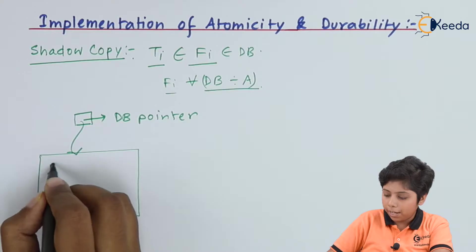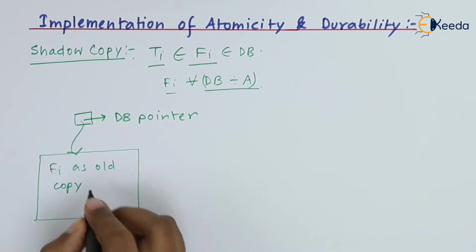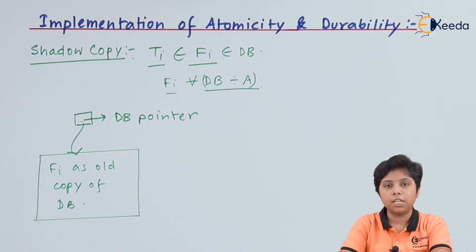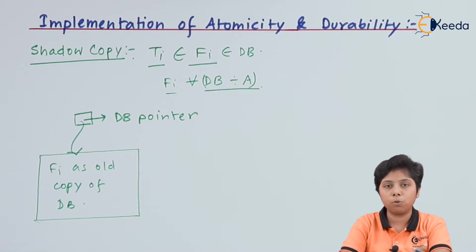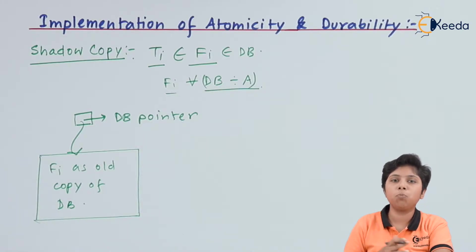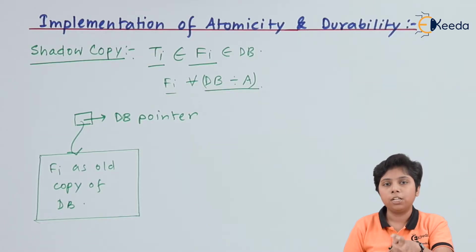So Fi holds the old copy of this database, and my DB pointer is pointing to that old copy. Now, whenever the transaction needs to access this particular portion Fi, it copies this into a new portion. For the transaction, this copy will be made entirely to a new file — a copy of Fi will be made.